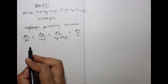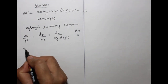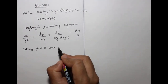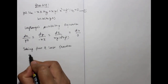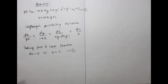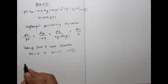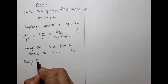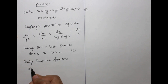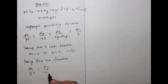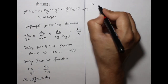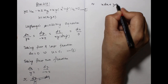Taking the first and last fraction: du = 0, which implies u = c1. Taking the first two fractions: dx upon YZ equals dy upon minus XZ. Z cancels out, giving X dx + Y dy = 0.